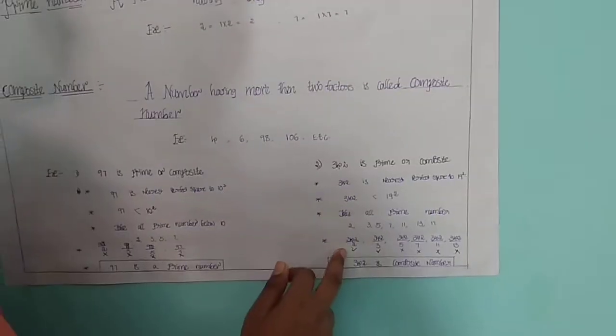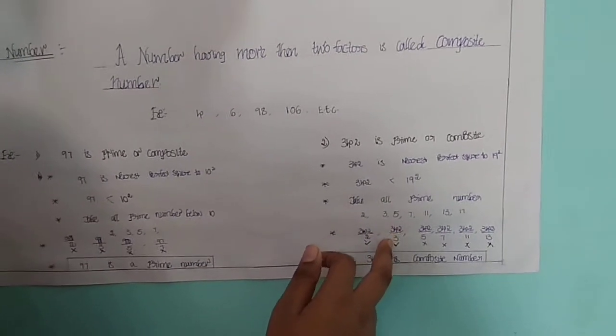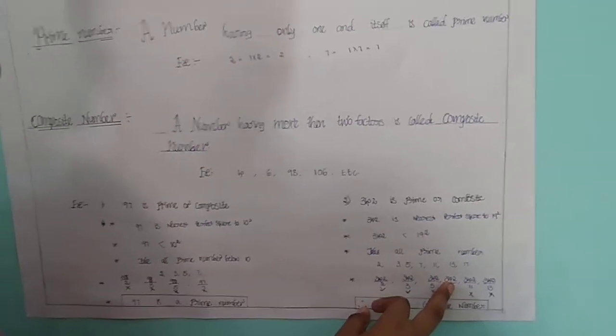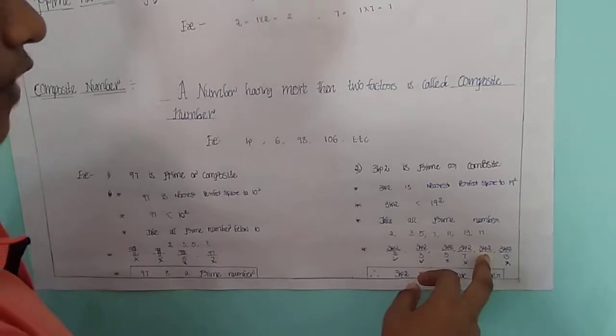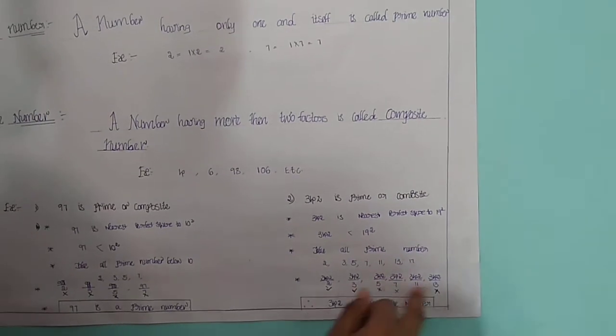342 is divisible by 2. 342 is also divisible by 3. 342 is not divisible by 5. 342 is not divisible by 7. 342 is not divisible by 11. 342 is not divisible by 13. 342 is not divisible by 17.